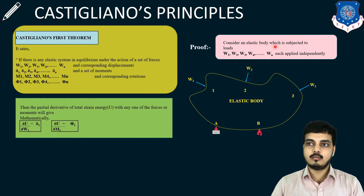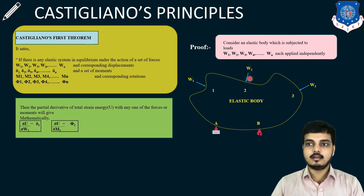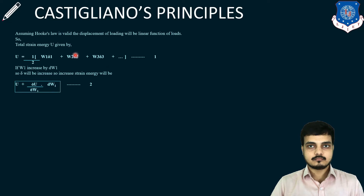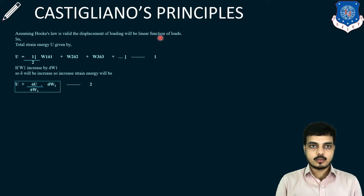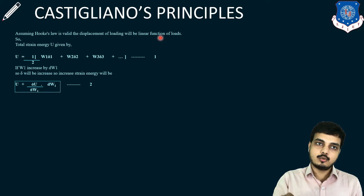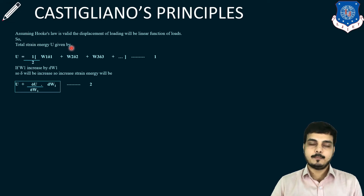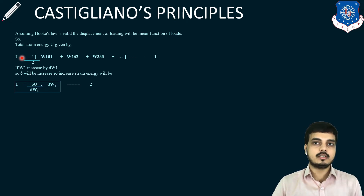Now let us consider a proof. Consider an elastic body subjected to loads W1, W2, W3 with supports — A support as a hinge or simple support, and B support as a roller support. These loads are applied independently. Assuming Hooke's law is valid, the displacement of loading will be a linear function. If load is applied gradually, the deformation will also increase in a gradual manner. So the total strain energy U is given by half of (W1·delta1 + W2·delta2 + W3·delta3 + ...) and so on.